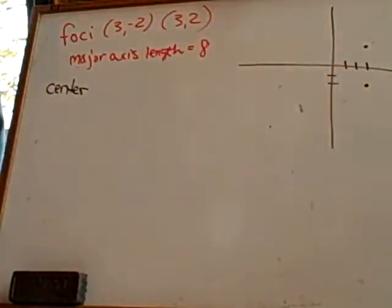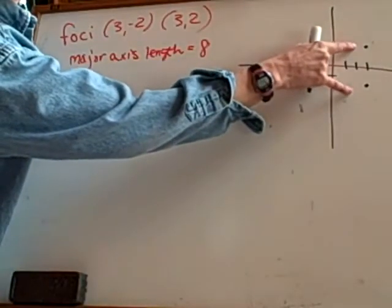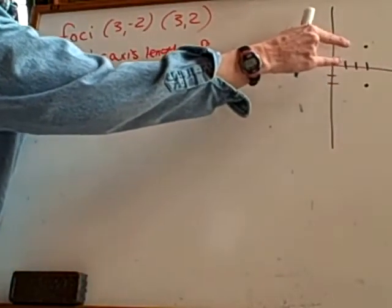So the x stays the same. The x stays the same, exactly. You can also know that halfway in between where my foci are located is what? The center.